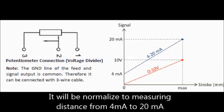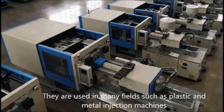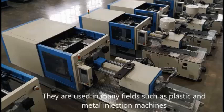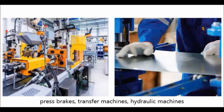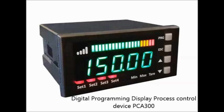It will be normalized to measuring distance from 4mA to 20mA. Unit has ingress protection IP62. They are used in many fields such as plastic and metal injection machines, press bags, transfer machines, hydraulic machines, or sheet metal processing machines. Digital programming display process control device PCA300.